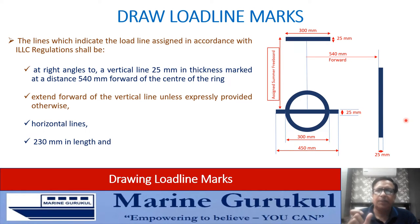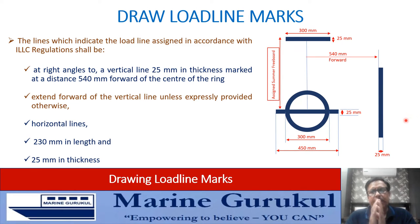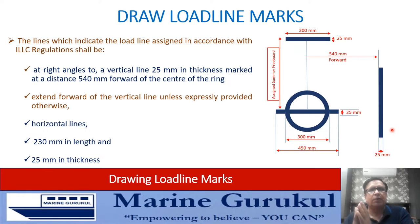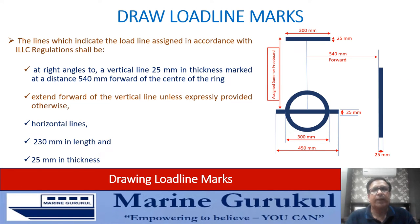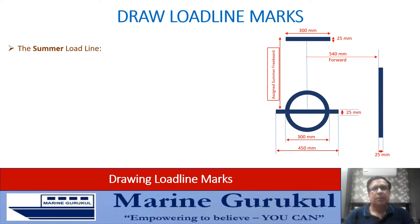All load line marks shall be horizontal, at right angles to the vertical line. Most will be going forward of the vertical line; some will be drawn aft as well. The length of each of those marks shall be 230 mm and their thickness shall be 25 mm.